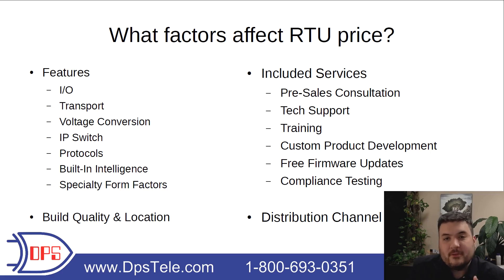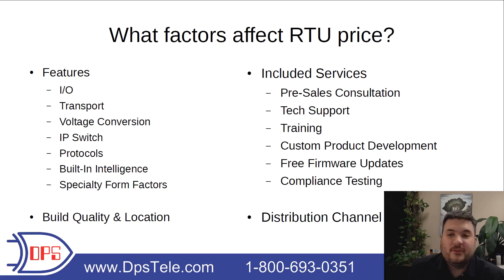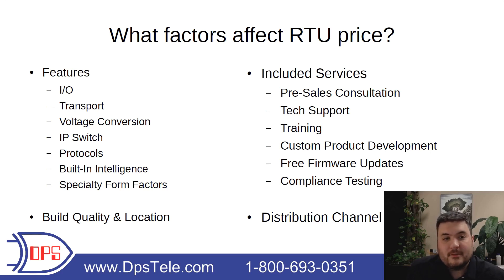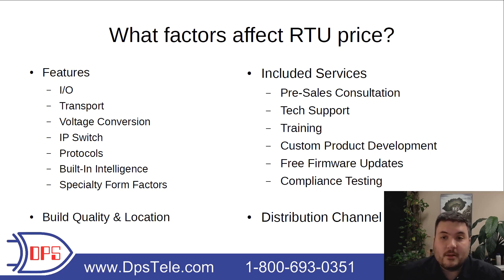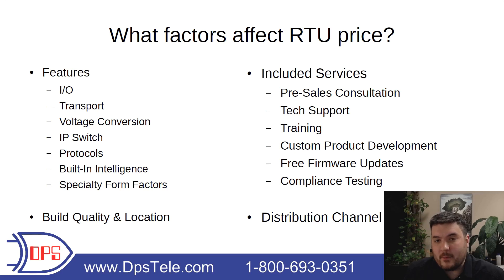If you need two, four, or eight discrete inputs to monitor doors, sensors, and equipment alarms, that's a fairly small RTU. But if you need 32 or 64, we're talking about a larger, more expensive RTU. For analogs, do you need any at all? And if you do, do you need one, two, eight, or 16? Same thing for control relays. That combination of how many you need in each of the three categories is probably one of the biggest factors affecting your RTU price.